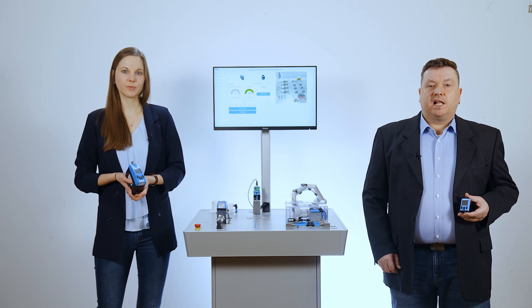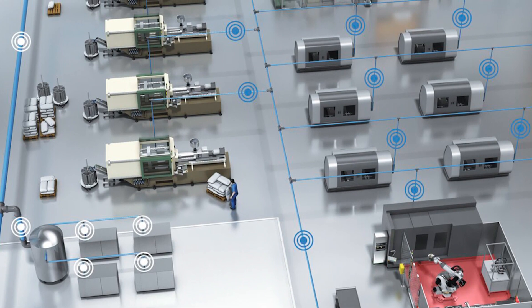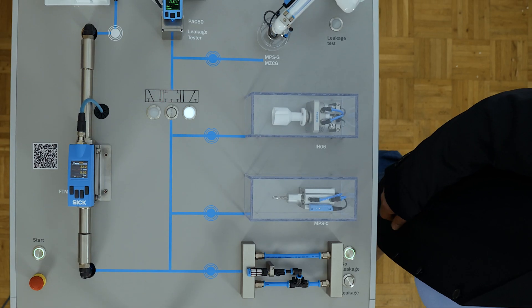We would like to show you in detail how this works with the help of our compressed air exhibit. A production line with a compressed air system is set up on the table as an example.